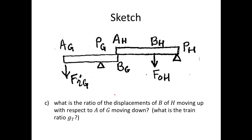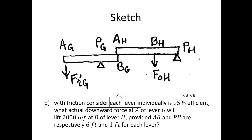Part C asks for the ratio of displacements of point B at H moving up with respect to point A of G moving down — in other words, the train ratio G sub T. Part D, with friction, considers each lever is 95% efficient. What actual downward force at A will deliver the 2,000 pound force at point B of H, with the same six foot and one foot distances?